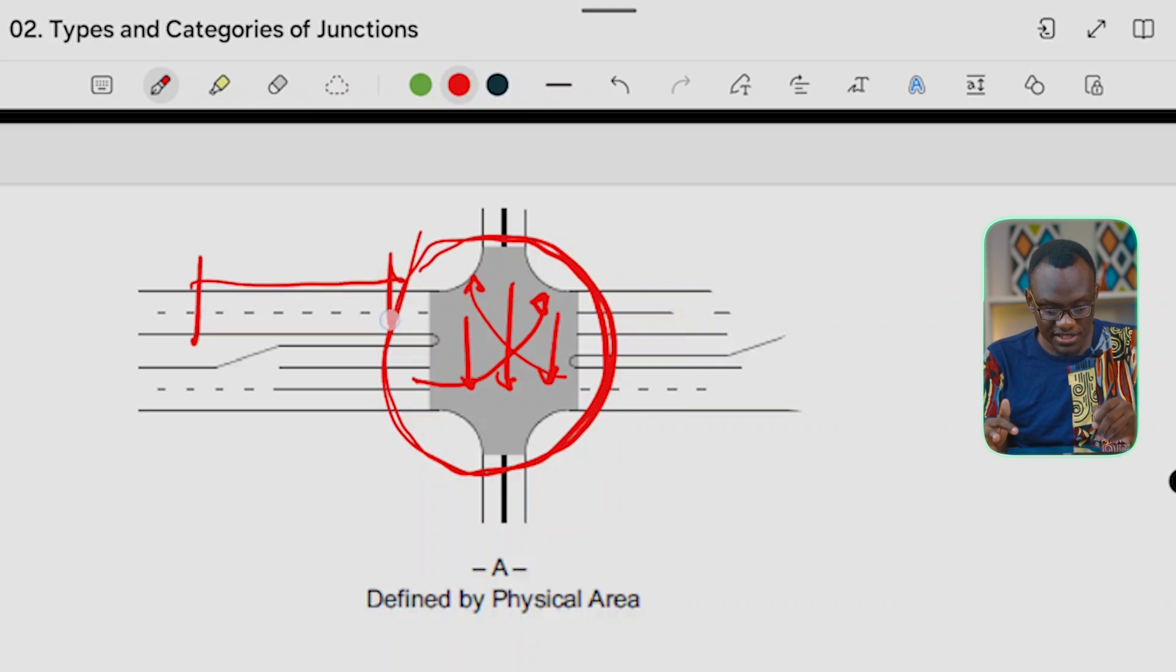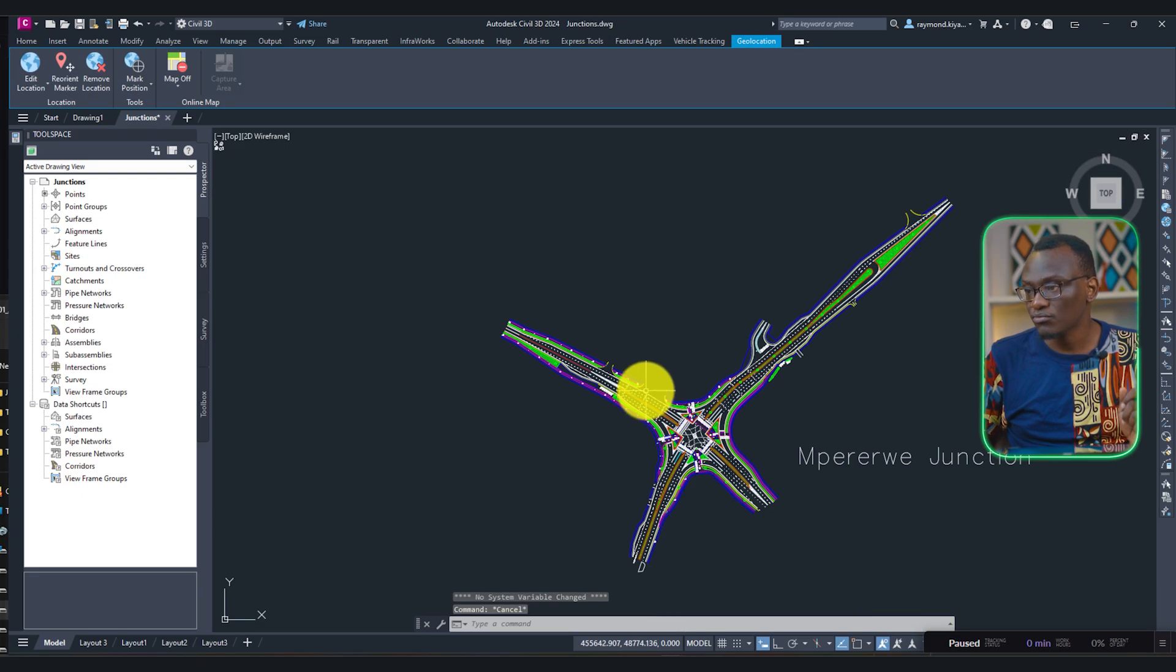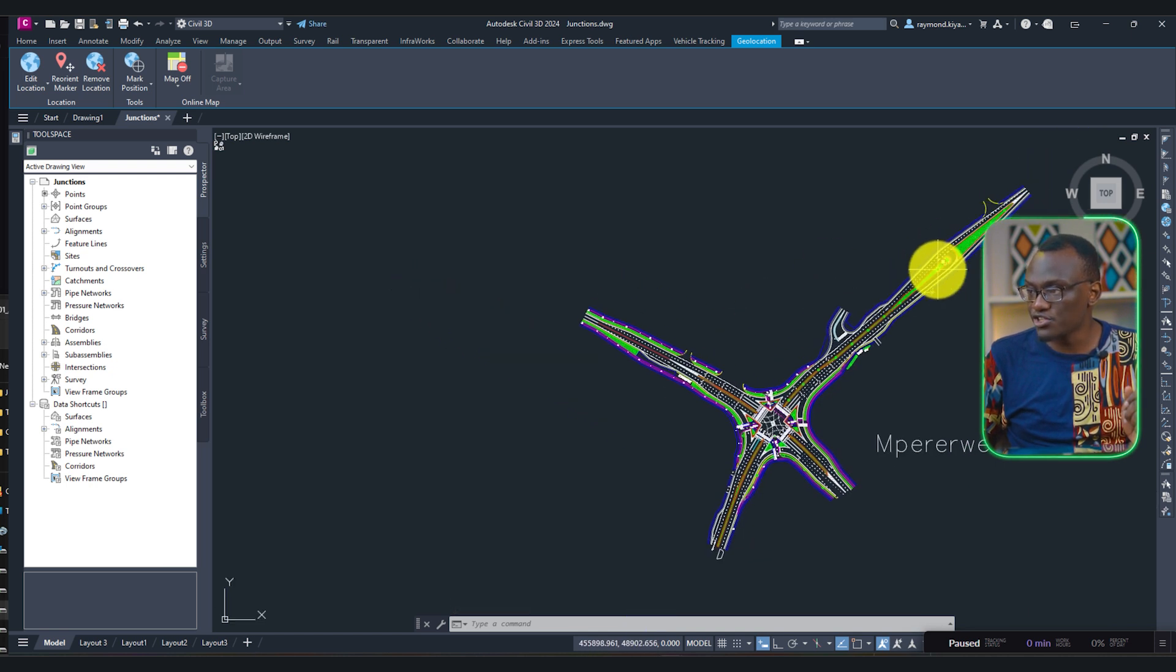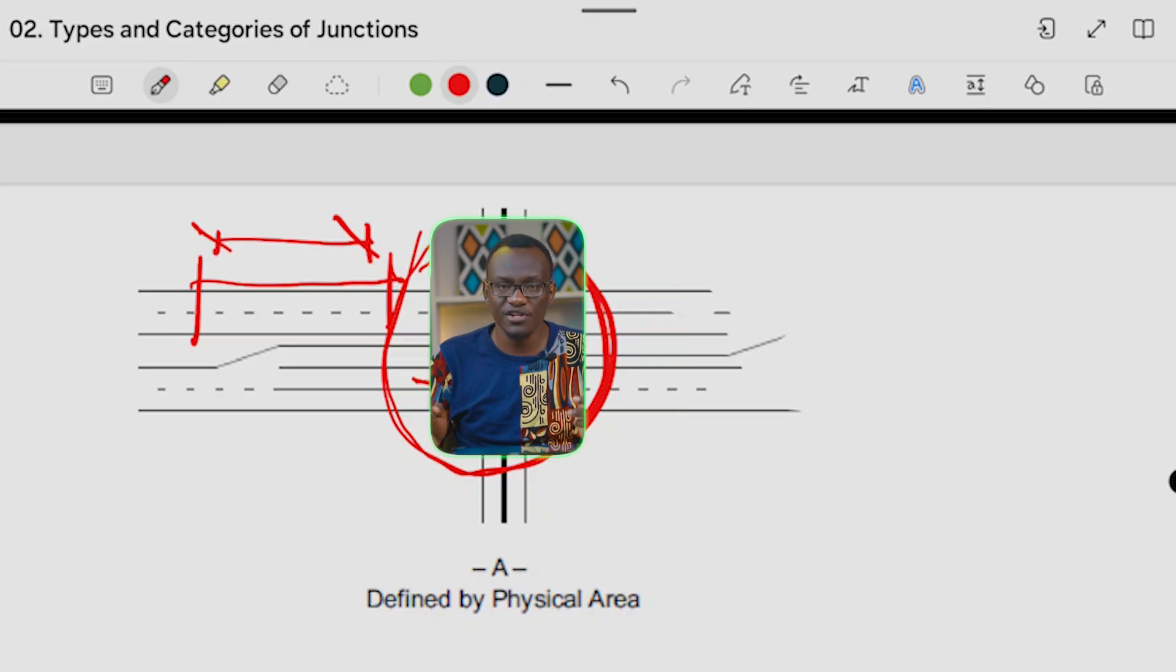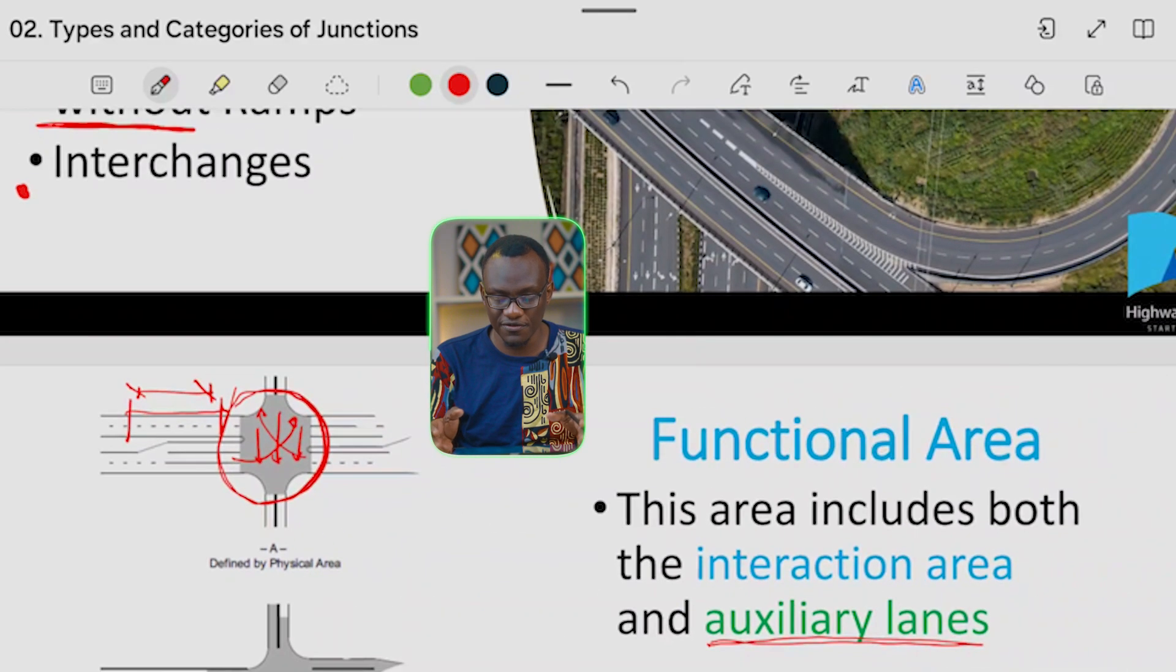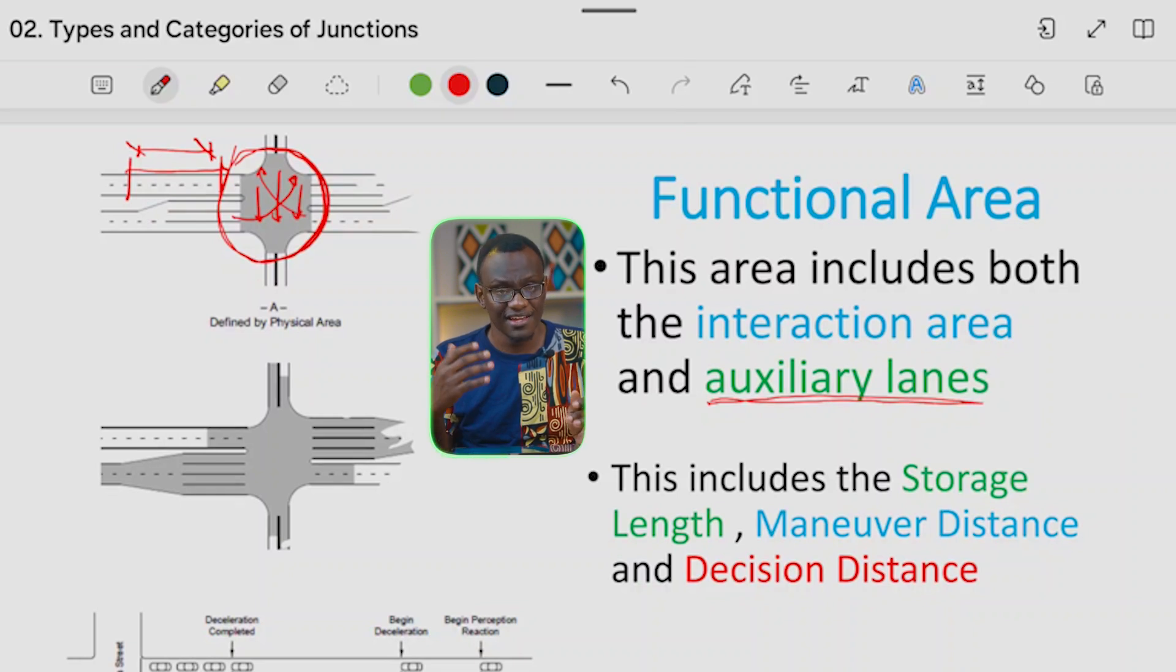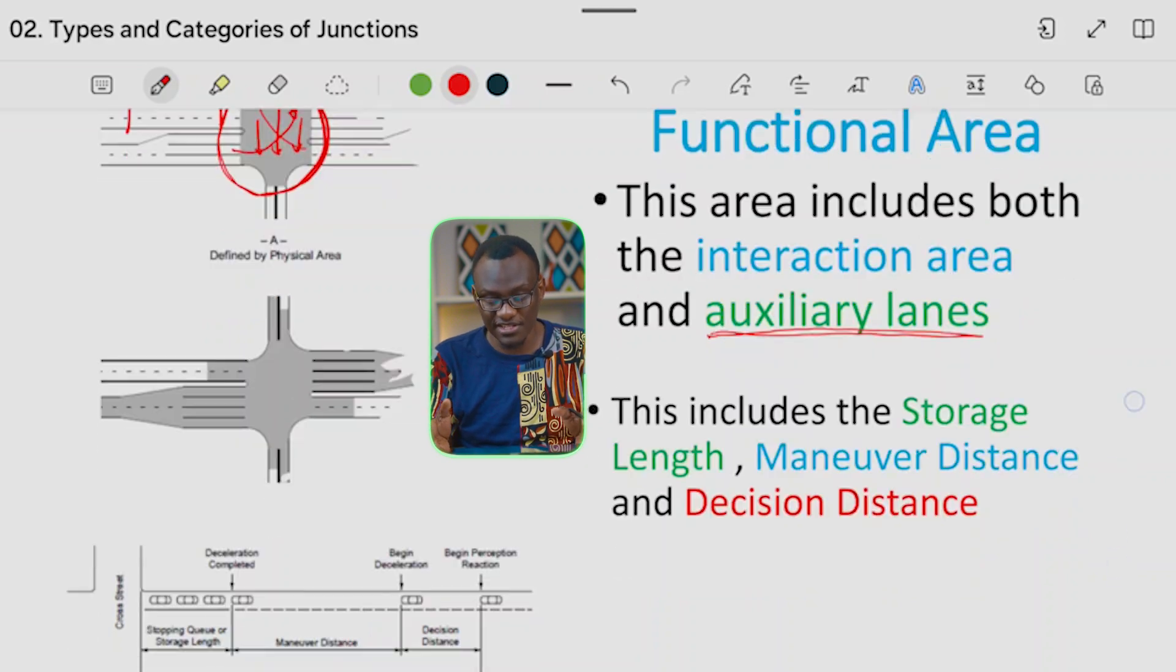Then we have the area where we have the auxiliary lanes, so this is where cars are making decisions as they approach the junction. When you're trying to work out design for a junction, for example in this case, we are trying to establish where will the functional area end. You can see the functional area for this case, this arm is the longest, so the functional area for this arm is way longer than this arm. This is shorter compared to this, and there are various reasons. These are based on site conditions and a number of things. So once you understand the functional area, you understand how far back the junction will span. And you're going to find that as I explained earlier, this includes the storage length, how many cars, the maneuver distance, and the decision distance.